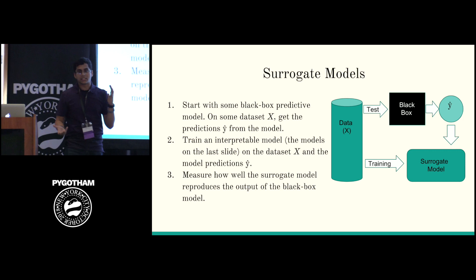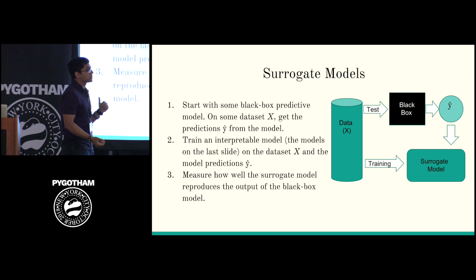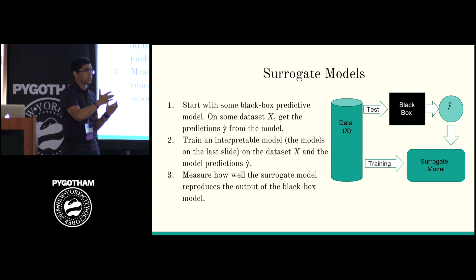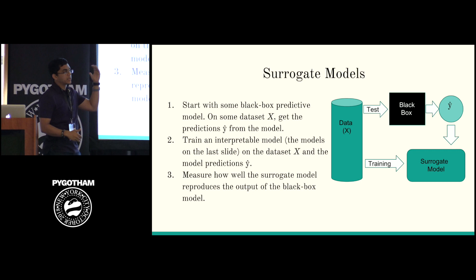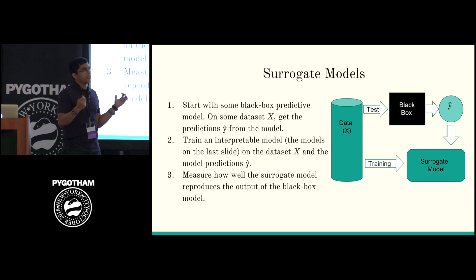A surrogate model works like this: you start with your black box model, you take some dataset, run it through the black box, and get the predictions. Then you train a surrogate model — say, a linear regression — on the data, using the black box's predictions as your labels. The goal of this surrogate model is not to get ground truth, but to reverse engineer what the black box is doing — to approximate it with a simple method we can understand.